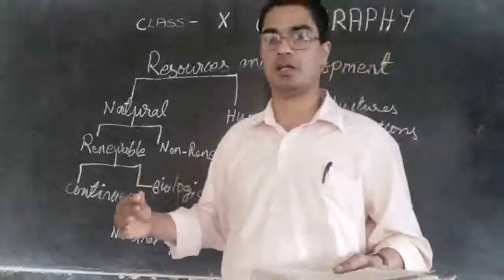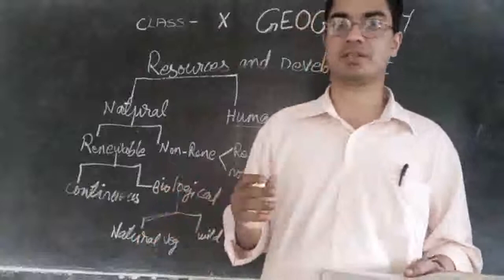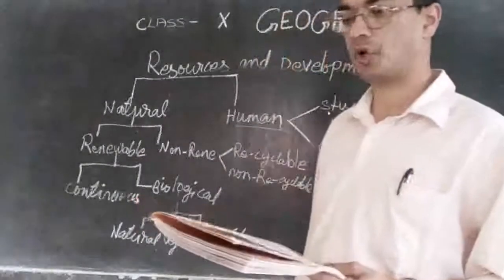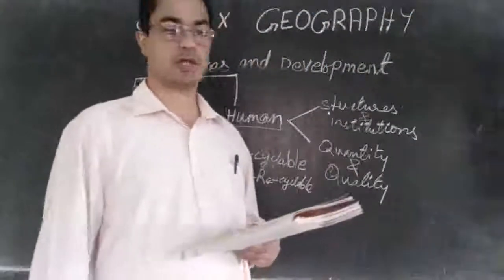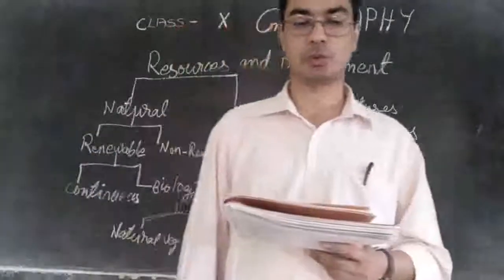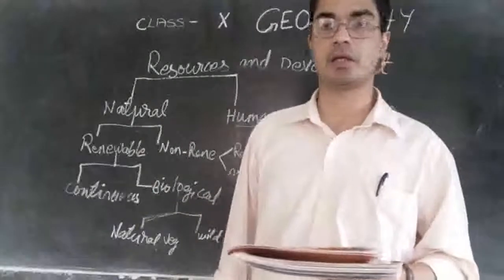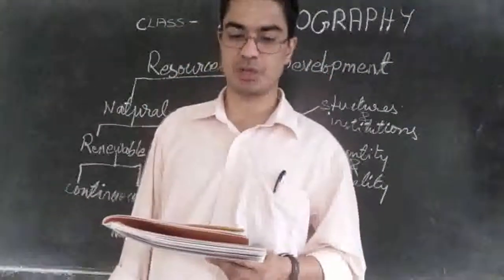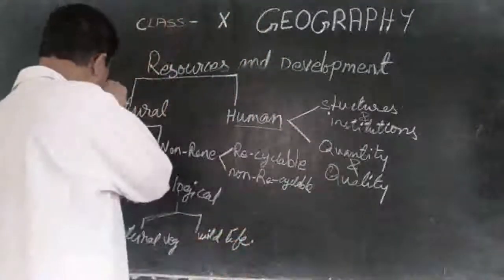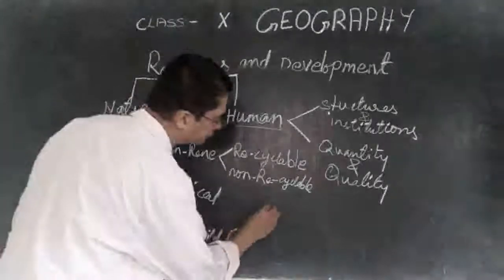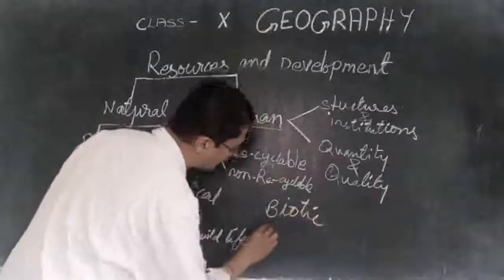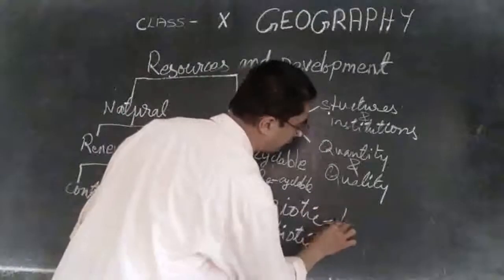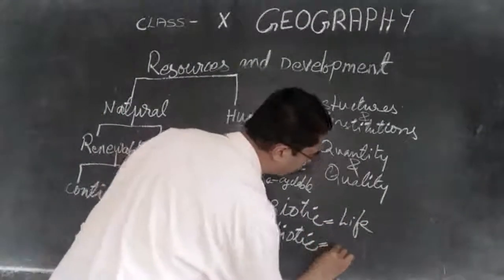We will look at how resources are divided and on what basis. First, on the basis of origin — on the basis of origin, we can divide resources into two: biotic resources and abiotic resources. Biotic and abiotic — these are the two types of resources. Biotic is with life, and abiotic is without life — no life.